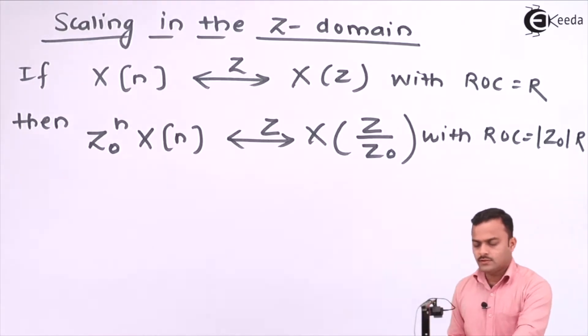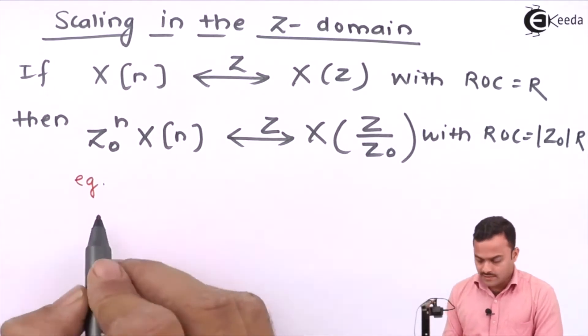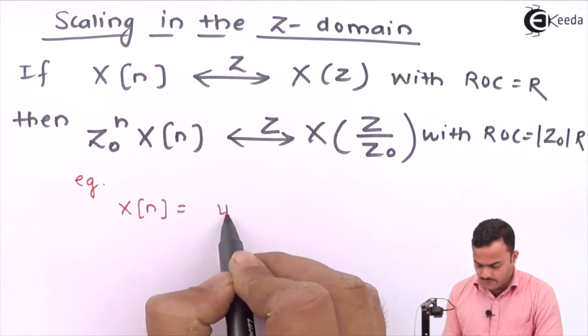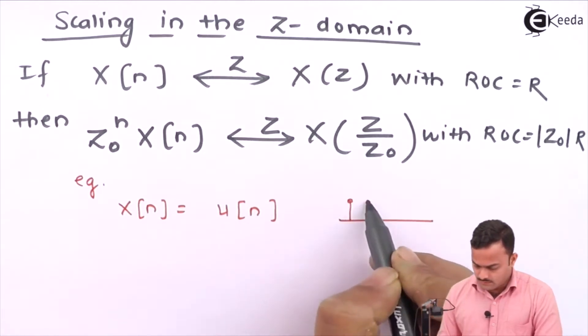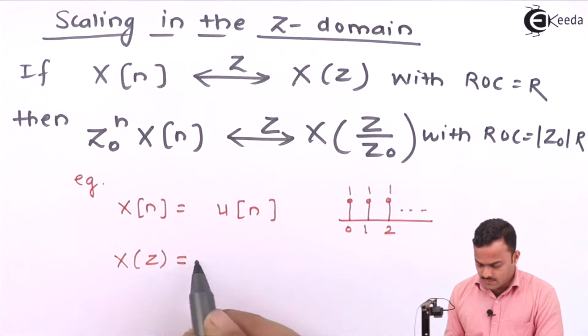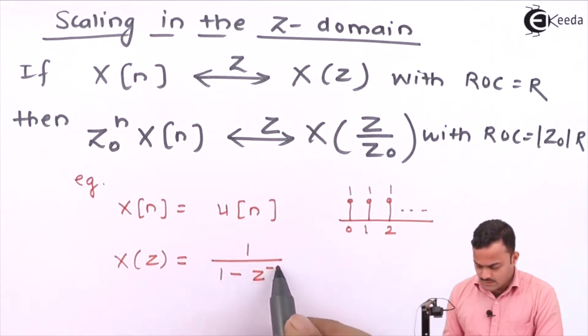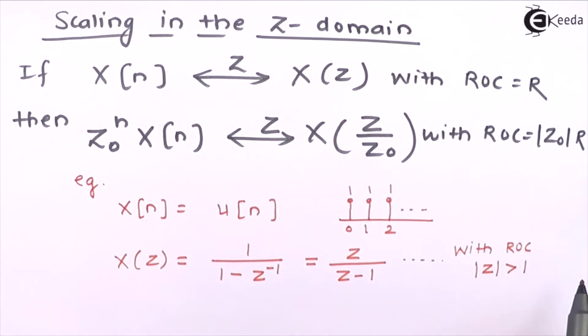Let's illustrate this with a simple example. I will consider this X of N as a simple signal U of N and I will plot this. It will be like this. And Z transform of this is nothing but 1 upon 1 minus Z inverse or you can say Z upon Z minus 1 with ROC mod Z greater than 1.